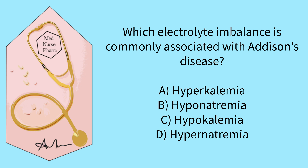A is correct. Addison's disease leads to decreased adrenal function causing a deficiency in aldosterone, which results in sodium loss and potassium retention, leading to hyperkalemia. B is incorrect. Addison's disease is associated with hyperkalemia due to decreased aldosterone levels leading to potassium retention, not hyponatremia. C is incorrect. Addison's disease causes hyperkalemia, not hypokalemia. D is incorrect. Addison's disease is not typically associated with hypernatremia; it is more commonly linked with hyperkalemia and hyponatremia.